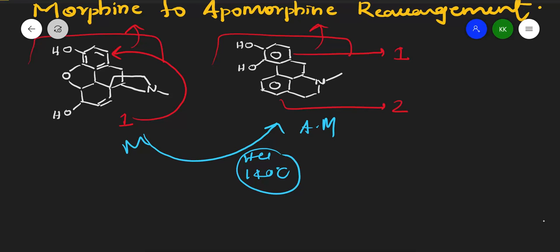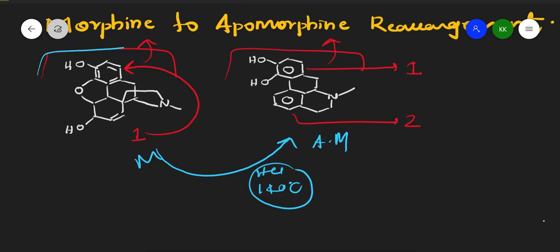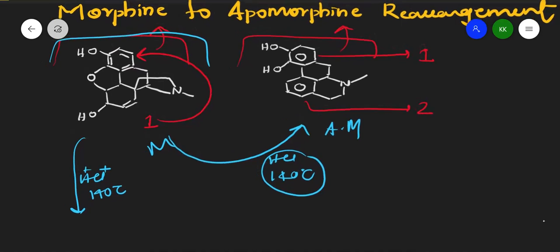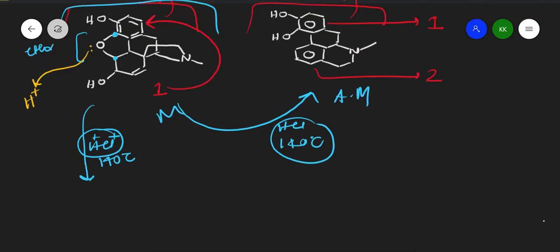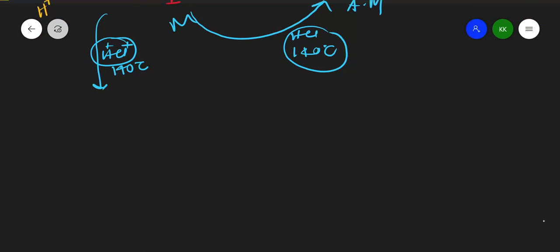Now let us see how this reaction happens. Starting with morphine, we add HCl — H⁺ and Cl⁻ — at 140 degrees Celsius. In the morphine structure, there is an ether bond (R-O-R). When we add HCl, the H⁺ reacts with this ether oxygen, giving us the next intermediate.